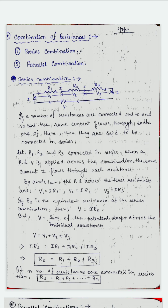Series combination means when a number of resistances are connected end to end. The current through each resistor is the same. So when the resistances are connected end to end, that type of combination is called series combination. In this figure, you see that we consider three resistances R1, R2 and R3. They are connected in series and potential difference applied across the ends is V.